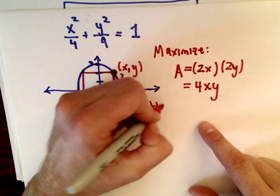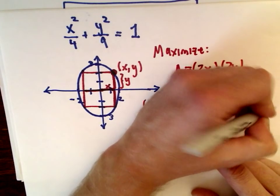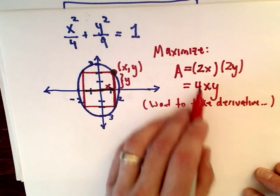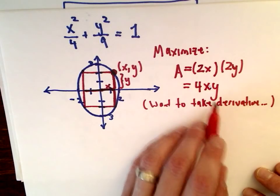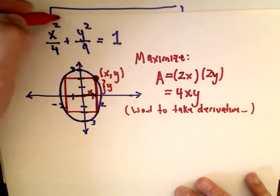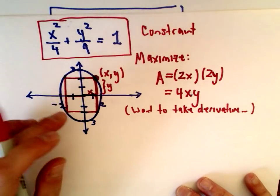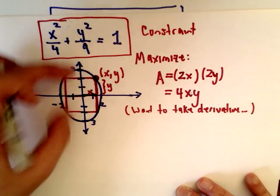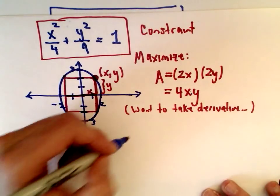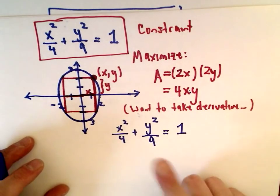To take the derivative, I need to express the area in terms of a single variable — either x or y — so I can find critical numbers and use the first derivative test to determine a maximum or minimum. The constraint is the ellipse equation x²/4 + y²/9 = 1, since the rectangle is trapped by the ellipse. I'll solve that constraint for y.